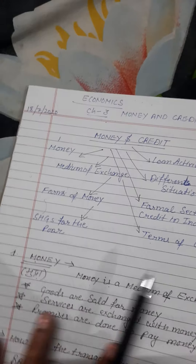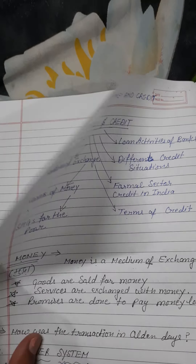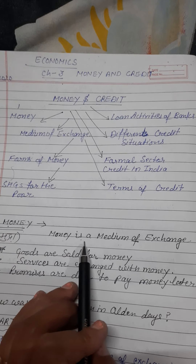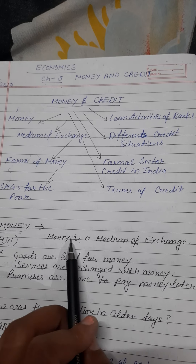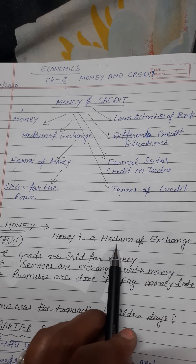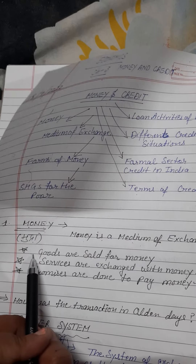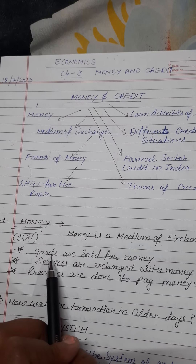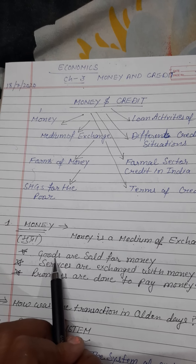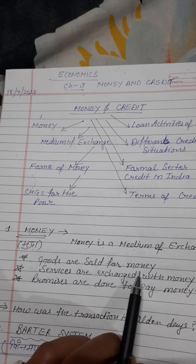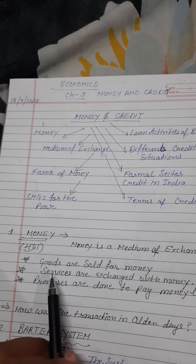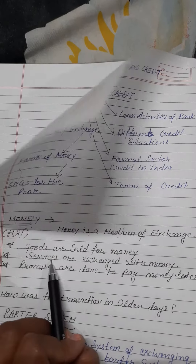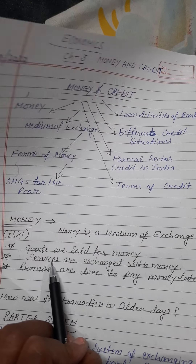The first topic is money — the main topic of this chapter. What is money? Money is a medium of exchange. Yani ki money ek madhyam hai. Is ke dwara goods are sold for money — hum jo bhi cheez khareedte hain ya bechte hain, wo money ke liye hoti hai. Koi bhi service hum lete hain to us ke liye paise dene padte hain.